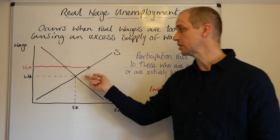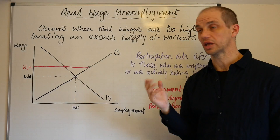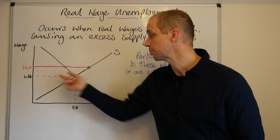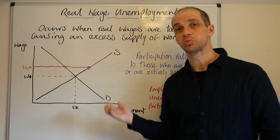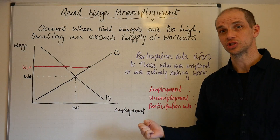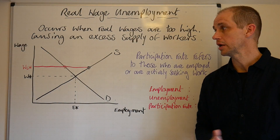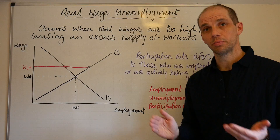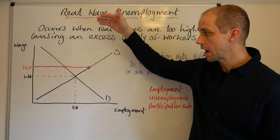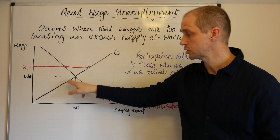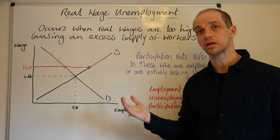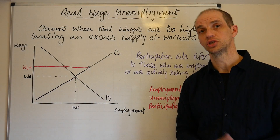We can see that we attain a market clearing equilibrium at W* and E*, and this would maximise societal surplus. There would be no deadweight economic loss, and every worker that wants to work at the given wage rate can actually find a job.